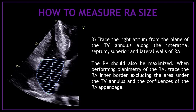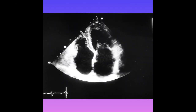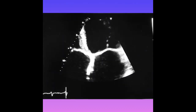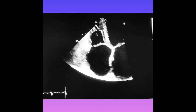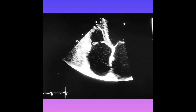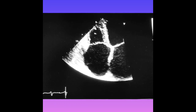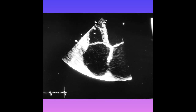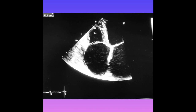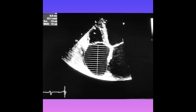When performing planimetry of the right atrium, trace the right atrial inner border excluding the area under the tricuspid valve annulus and the confluences of the right atrial appendage. Find your apical four-chamber view and maximize the right atrium. Freeze the image at the end of ventricular systole, on the frame just before the tricuspid valve opening. Select the right atrial area or volume on the measurement package and trace along the inner edge: from the tricuspid annulus along the lateral wall, along the roof, along the interatrial septum back to the tricuspid annulus. You will obtain the right atrial area and volume.